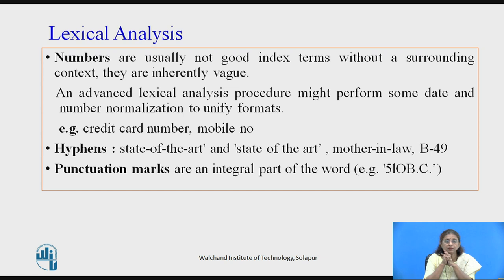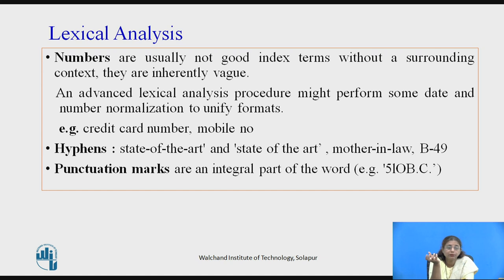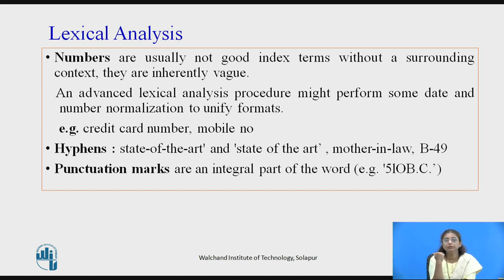Generally, numbers are not good index terms without surrounding context — they are inherently vague. For example, a query selecting data between the years 2020 and 2021 uses those years as index terms, but other unrelated data containing those numbers may also be retrieved. However, we cannot simply skip numbers because sometimes credit card numbers, mobile numbers, or PAN card numbers are needed for retrieval, and if not stored as index terms, that data cannot be retrieved. There are advanced lexical analysis procedures that perform date and number normalization to uniform the formats.